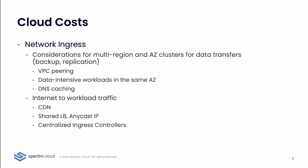A couple of gotchas to pay attention to regarding network ingress: especially for multi-region and availability zone clusters, data transfer will incur extra charges — things like backup replication from one AZ to another. To alleviate that, you want to do VPC peering between all your VPCs to reduce that cost, and then constrain data-intensive workloads within the same AZ in general to avoid data leaking from one AZ to another.